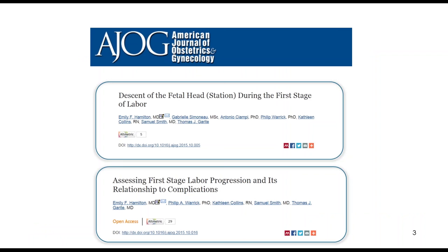We do live in interesting times, and our profession itself is going through a period of transition with respect to thinking about labour and how to define safe limits of labour. We're very pleased to have contributed to that debate with these two very recent publications. The first is a normogram of descent versus dilation in the first stage, and the second relates to different methods of assessing performance with respect to the evaluation of labour progress. Several concepts from these papers will be present in our webinar today.